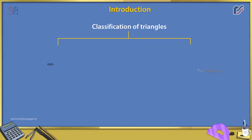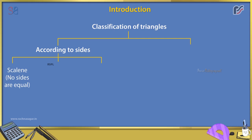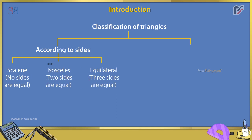Classification of triangles according to sides: Scalene — no sides are equal. Isosceles — two sides are equal. Equilateral — three sides are equal.